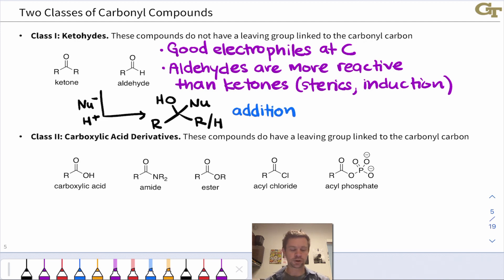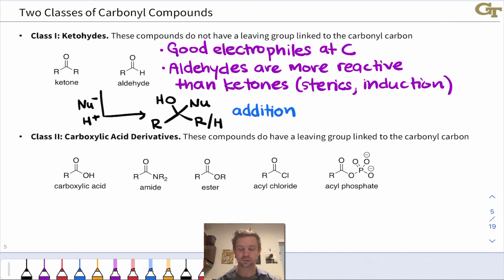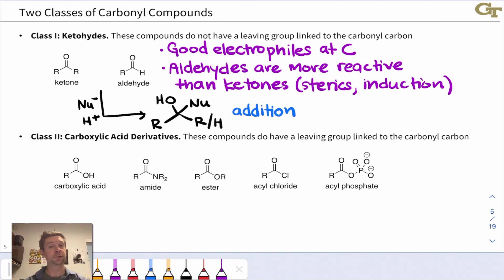Class II are the carboxylic acid derivatives. These compounds are characterized by a potential leaving group in the heteroatomic group linked to the carbonyl carbon. A great example highlighting this potential is the acyl chloride, in which chlorine is connected to an acyl group.